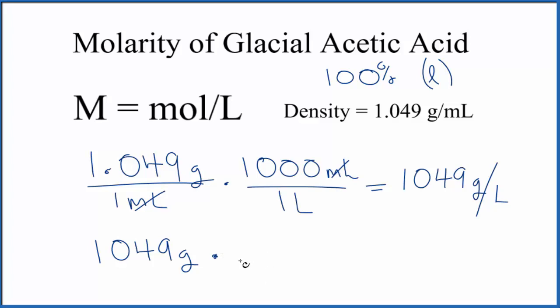For acetic acid, we know one mole is 60.05 grams—that's the molar mass. We multiply the top, divide by the bottom, grams cancel out.